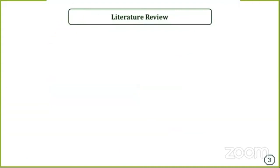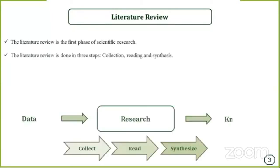The literature review is one of many research methodologies that can be used to conduct secondary research. It's the first phase of the scientific research process and is done in three steps: data collection, reading, and synthesize.